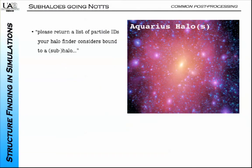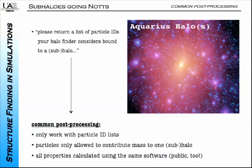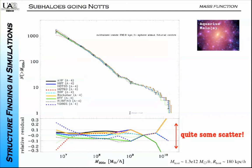Moving on to 'subhalos going nuts': we outsourced as much as possible. We did not ask for calculated properties anymore—we just asked them to give us the particle ID lists of those particles they think belong to an object. Then we used a common post-processing pipeline to calculate whatever we wanted. We even removed duplication of particles, so only one particle could belong to one object. We calculated the mass ourselves, so if we screw it up, we screw it up for everyone the same way. Yet you still see the same kind of scatter.